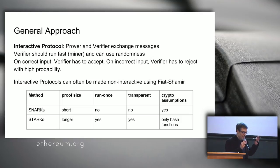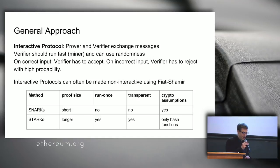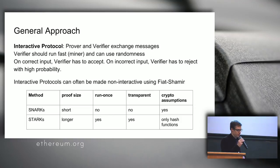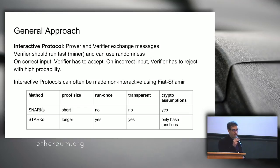STARKs can also have zero knowledge with private parts, but you don't need the trusted setup or the 'toxic waste' random numbers that need to be destroyed. SNARKs rely on cryptographic assumptions such as elliptic curve security and knowledge of exponent, which would not hold once we have scalable quantum computers since quantum computers can break elliptic curve cryptography. For STARKs, that's better — they only rely on the existence of collision-resistant hash functions, which is something that is reasonably assumed to hold for quite a long time.